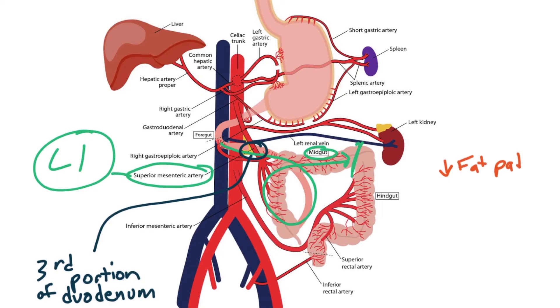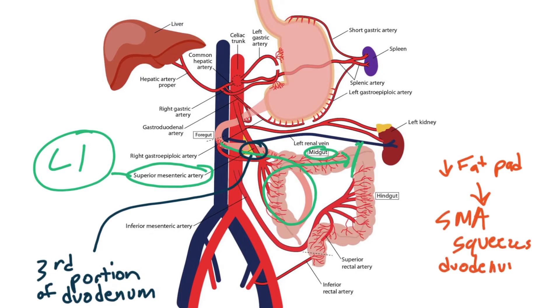If this fat pad has diminished — which can occur for a variety of reasons including malnutrition, anorexia, or cancer — then the duodenum can be squished, leading to a small bowel obstruction. This is called SMA syndrome.